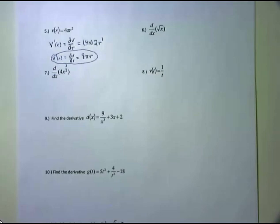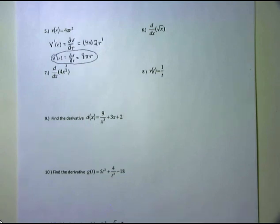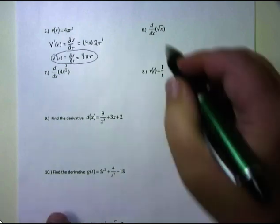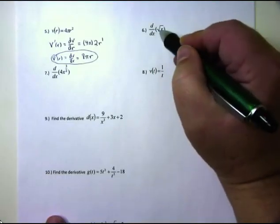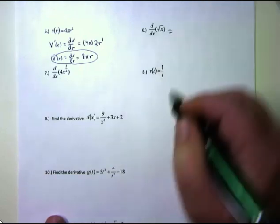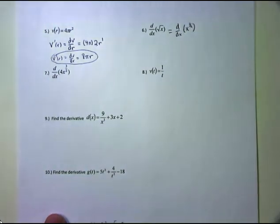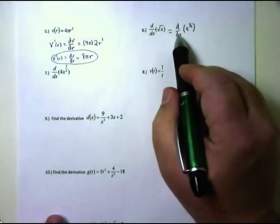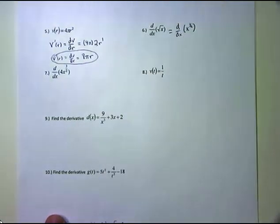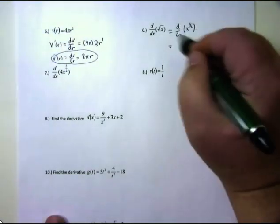Always remember: clean up your algebra first to try to make it look like a rule. We'll be adding more rules — trig functions and others your professor will give you in class. But always clean up first. For example, d/dx of square root of x — this equals d/dx of x to the one-half power. The notation d/dx means take the derivative of what follows.